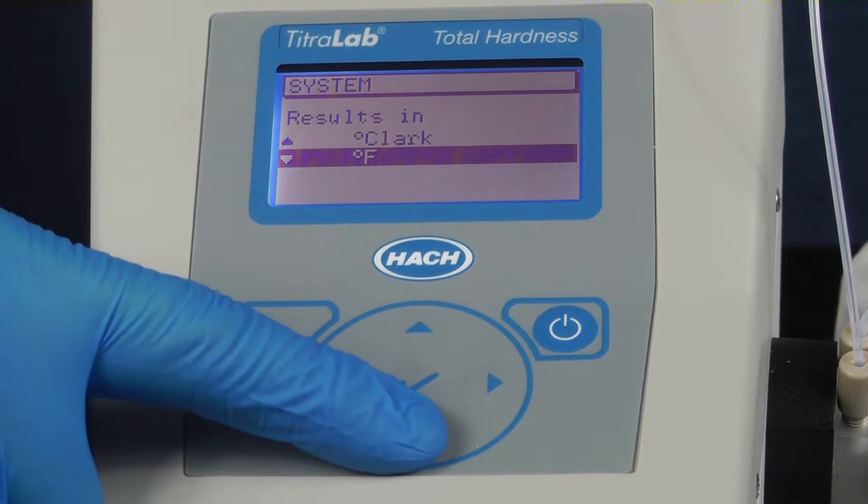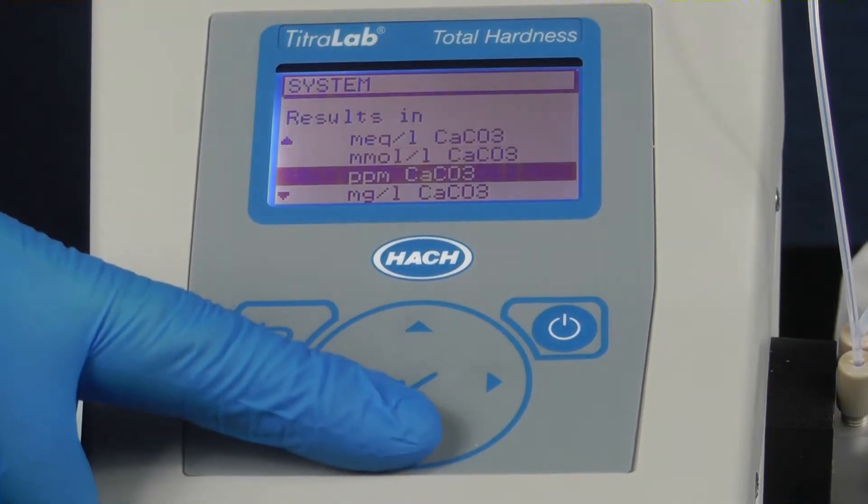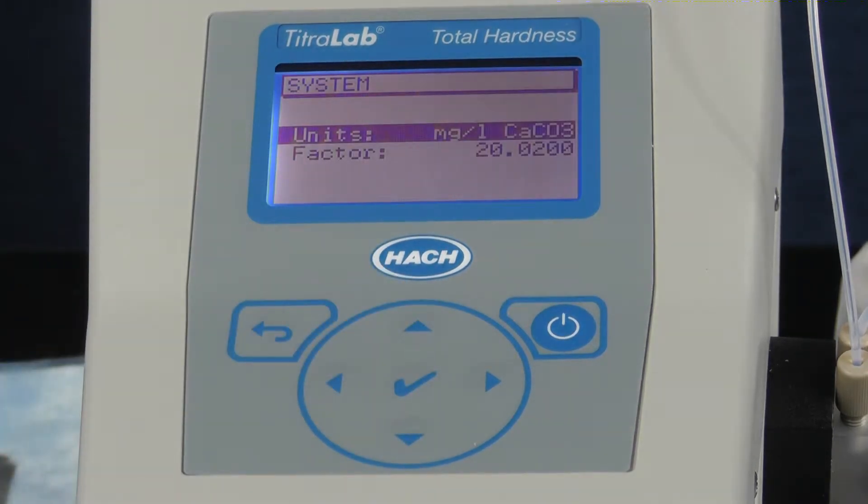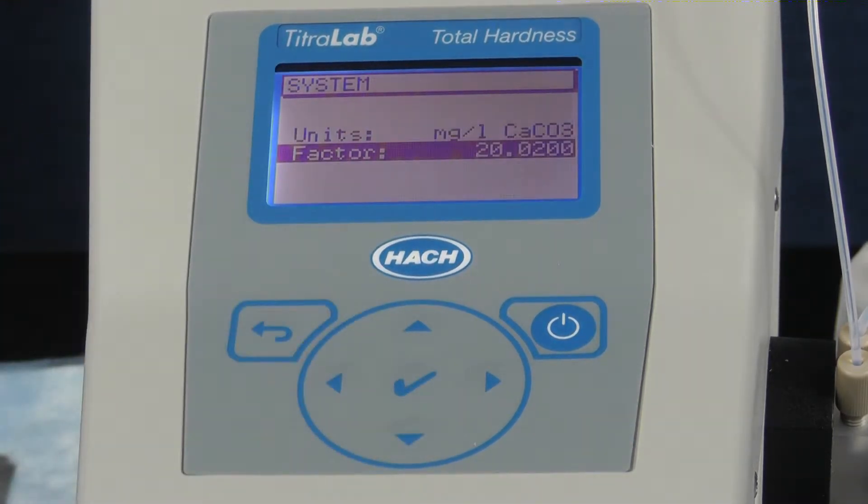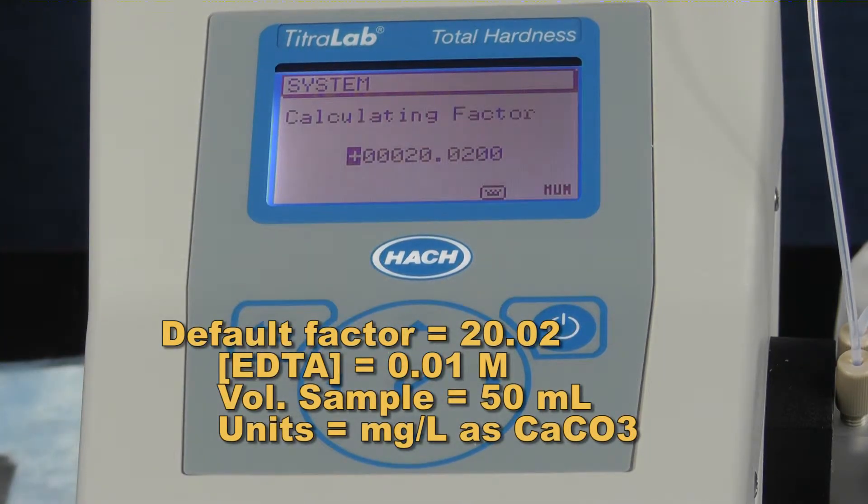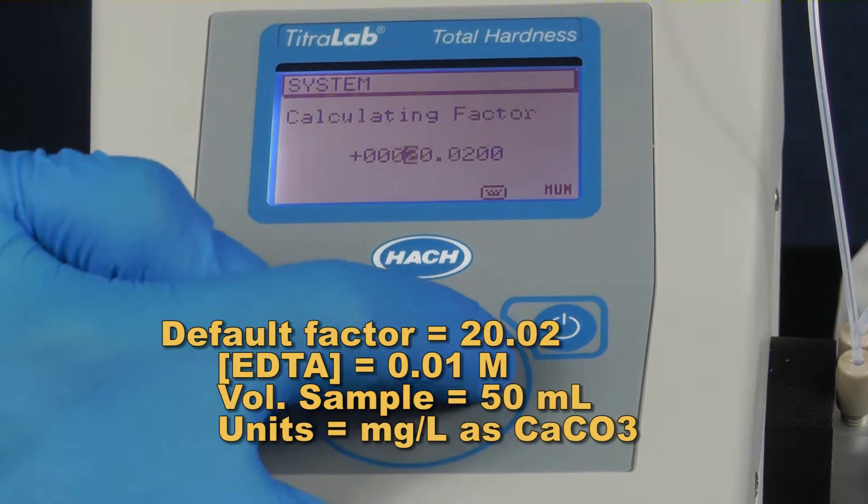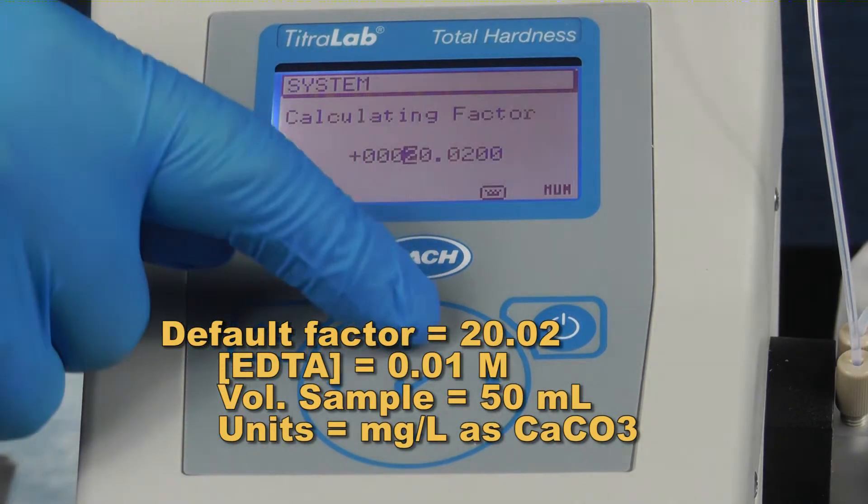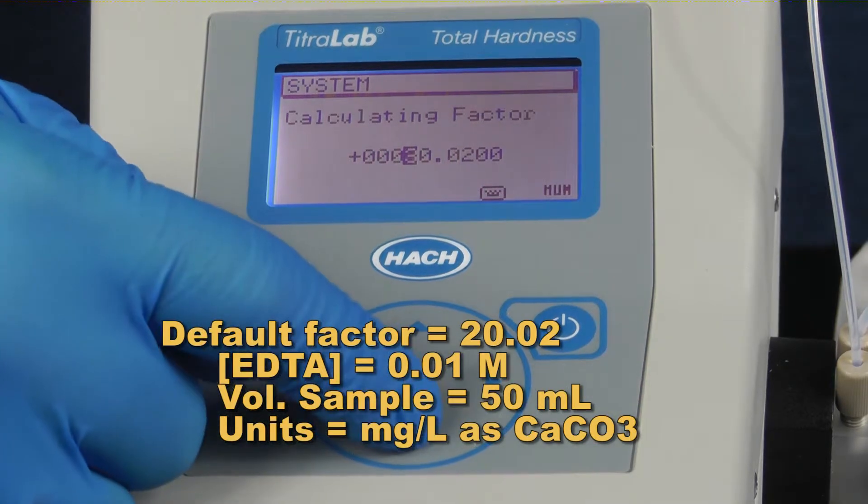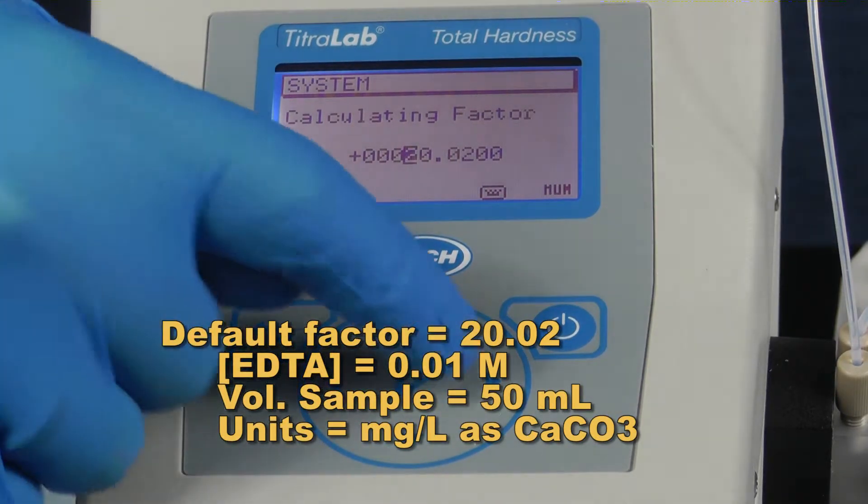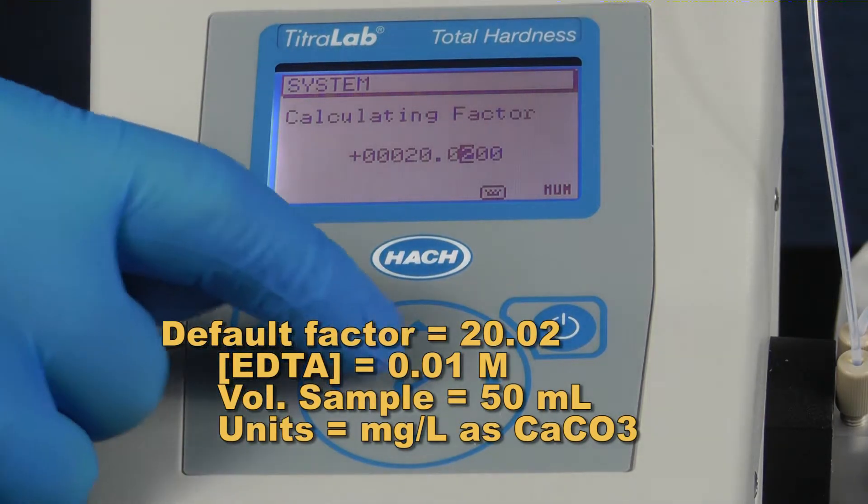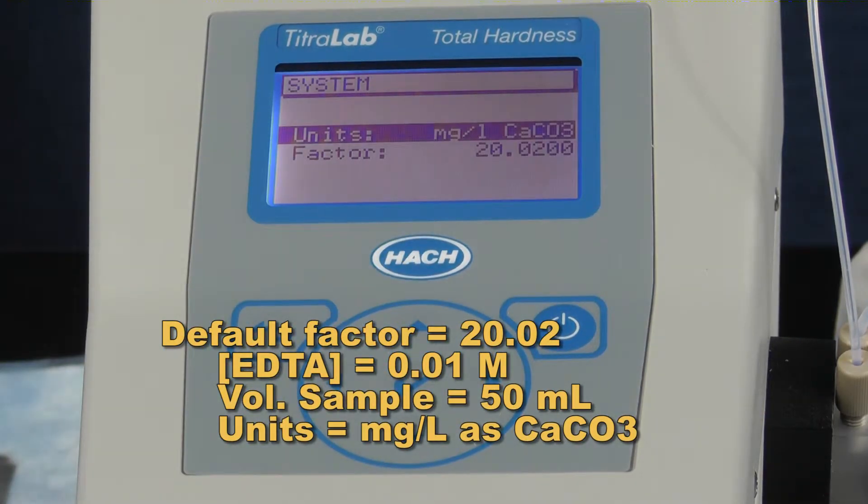If you need to change the results factor for your results due to a change in titrant or volume of sample, select factor. Use the right and left arrow keys to scroll over to the digit and press the up and down arrows to scroll through the correct number. Press the check button to return to the previous screen and the return button twice to return to the main menu.